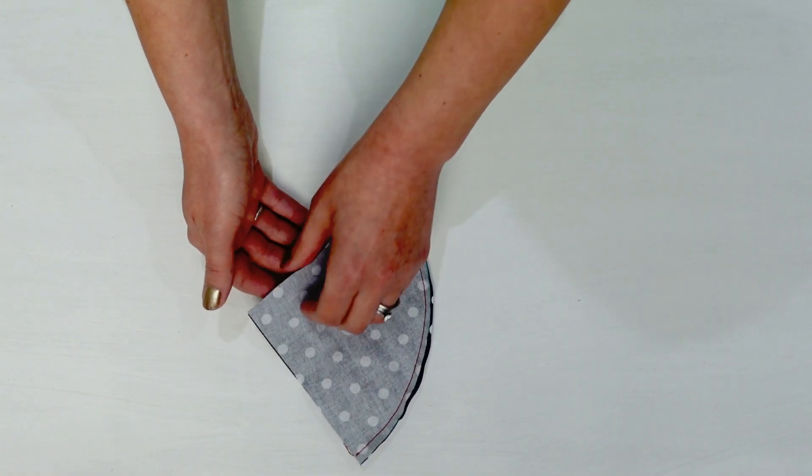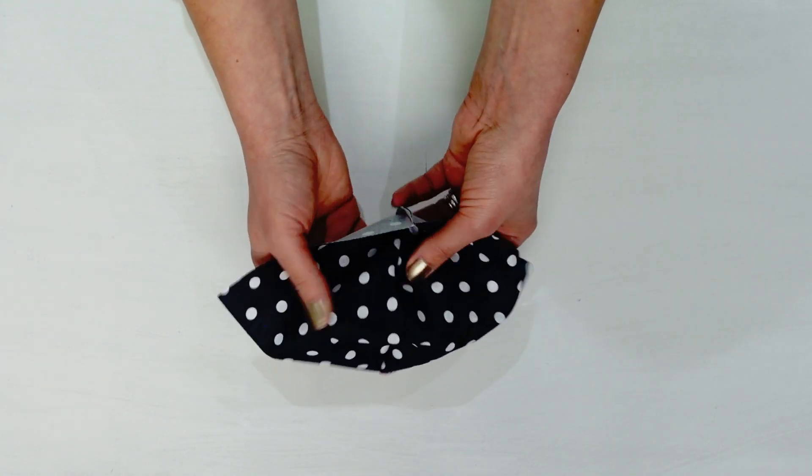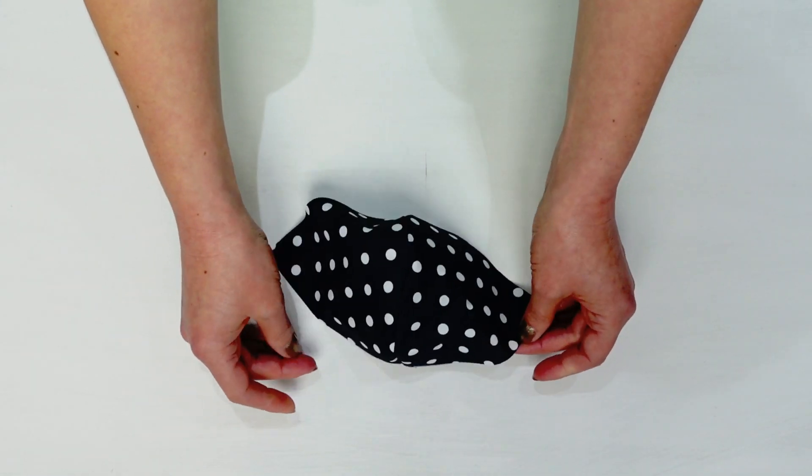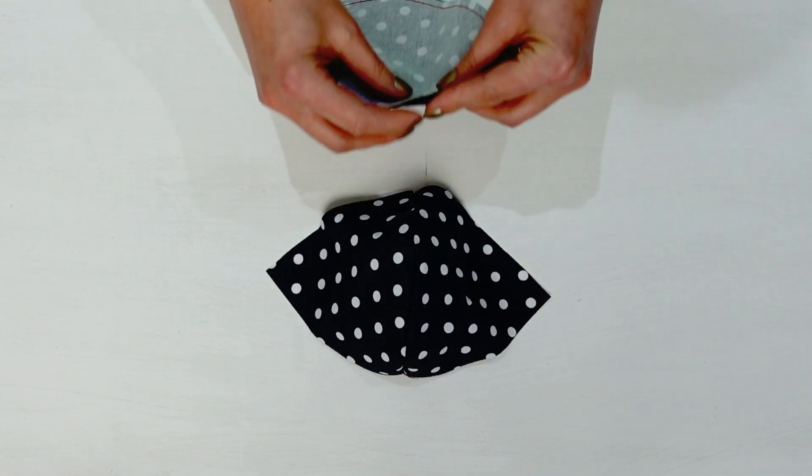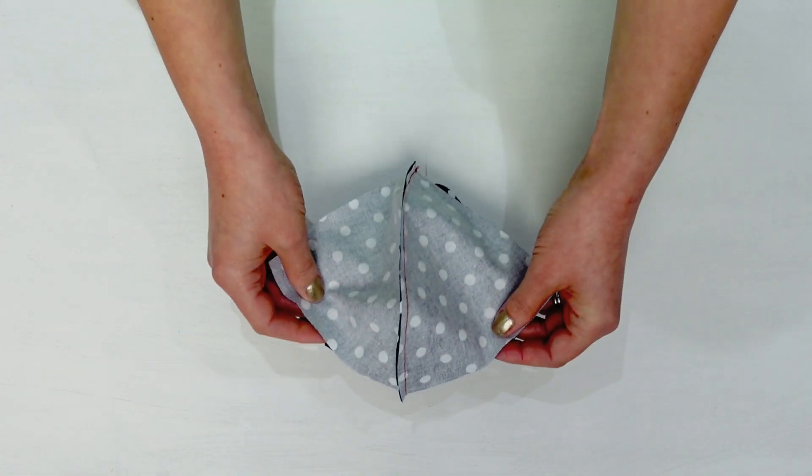Take one half and open it out so that it's right sides out. Then grab your other half and place that on top so that they are now right sides together.